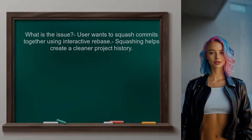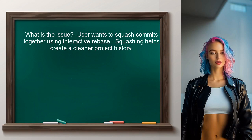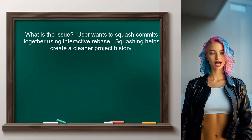So what exactly is the issue here? When using interactive rebase, the user wants to squash certain commits together, but they are unsure how to do it correctly. Squashing commits can help create a cleaner project history, but it can be tricky if you're not familiar with the process.